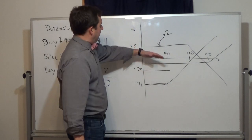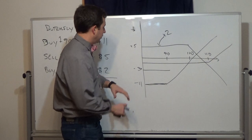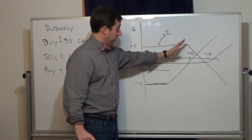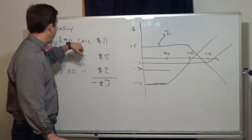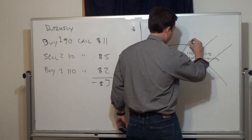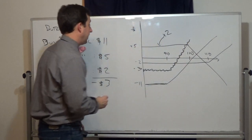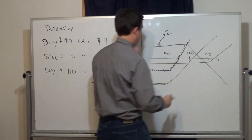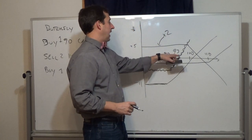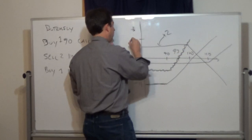What happens above $90? The 100-call and 110-call don't change yet, but the 90-call starts gaining. So the butterfly P&L increases along with the 90-call, which has a slope of one. It crosses zero (break-even) at $93 and increases all the way up to $100, reaching a maximum of +$7 at $100.